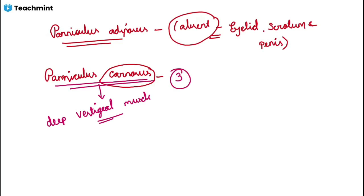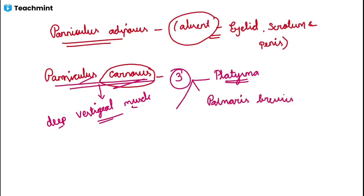There are three different vestigial muscles present in our body: platysma, which is around the neck — remember this is a muscle, not a tendon or fascia. Then there is palmaris brevis. And lastly, dartos muscle, which is present in the scrotal fascia. So the three subcutaneous vestigial muscles are: platysma, palmaris brevis, and dartos muscle.